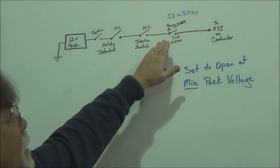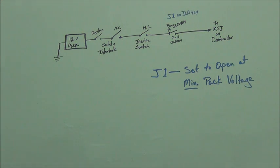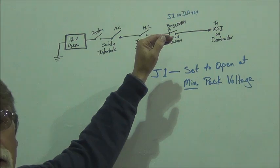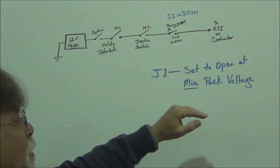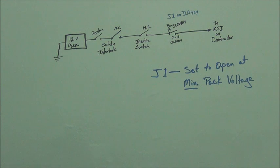And so here's pins 19 and 18 on the J1, on the JLD-404, normally closed, but we would program it to open when we reach our minimum pack voltage. Like I said, it's just another safety, a redundancy in the system to protect the most costly component of our conversion, which is our battery pack.